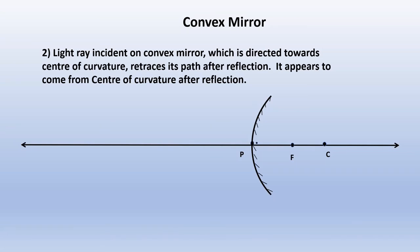Rule 2: A light ray incident on the convex mirror directed towards the center of curvature retraces its path after reflection. Using these two rules, we can draw the image formed by the convex mirror.